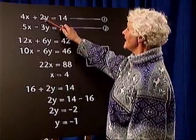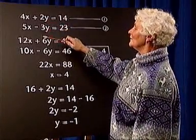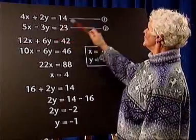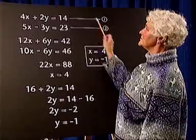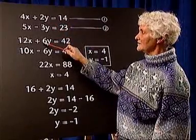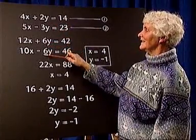To do this we find the LCM of 2 and 3 which is 6. So we multiply the first equation by 3 and the second equation by 2, so that the coefficient of y is 6 in both equations.